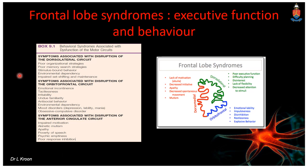Moving to the dorsal medial frontal region: this area governs the energization process. Patients with dorsal medial dysfunction lose their energization and fall on a spectrum from abulia to apathy to akinetic mutism. You can think of it as when you start to daydream in a boring lecture — you're losing dorsal medial frontal function. The FAS test is used to assess this area, and pathology here can cause abulia, apathy, or akinetic mutism.